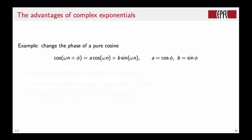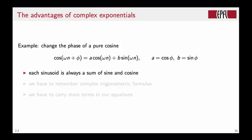Let's look at an example of the advantages of using complex exponentials. You want to do the change of phase of a pure cosine. You start with cos(ωn + φ). This will be written as A times cos(ωn) + B times sin(ωn), where A and B are given here. If you know your trigonometry by heart, you know this is a very natural thing. But if you don't remember all the trigonometric formulas, you can always look them up on Wikipedia. But it is a little bit a cumbersome way to actually deal with such simple operations.